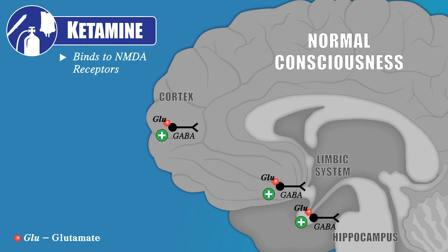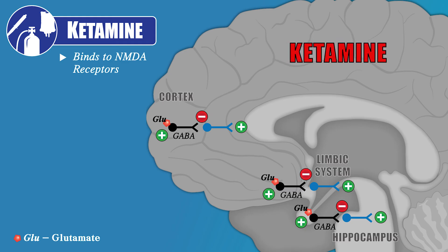These inhibitory interneurons normally work to control excitatory actions in the brain. However, when ketamine is administered at low to moderate doses, it serves to bind to and block these NMDA receptors. By blocking the activity at these inhibitory interneurons, they no longer provide inhibitory signals to the downstream excitatory neurons they communicate with. Without inhibition, these excitatory neurons become disinhibited and are allowed to become more active, leading to an altered arousal state consisting of aberrant excitatory activity.